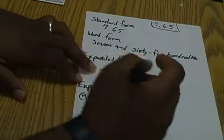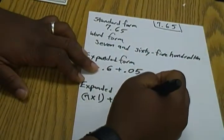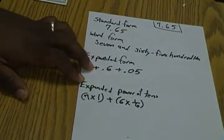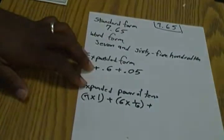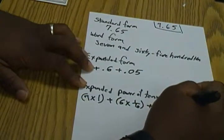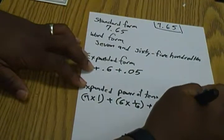Plus our six is in the tenths place, so it's going to be plus six times one tenth, since the six is in the tenths place. Plus, and we're going to go to our five, which is in the hundredth place, plus five times one over one hundred.